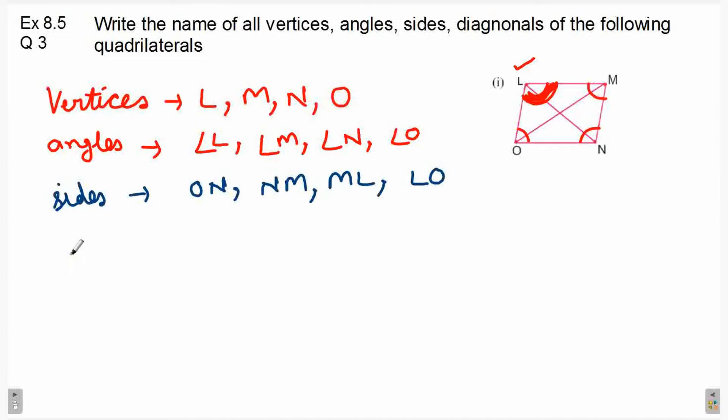Next is diagonals. Now, diagonal is also a line segment. You can write the points. LN or NL. Similarly, OM or MO.